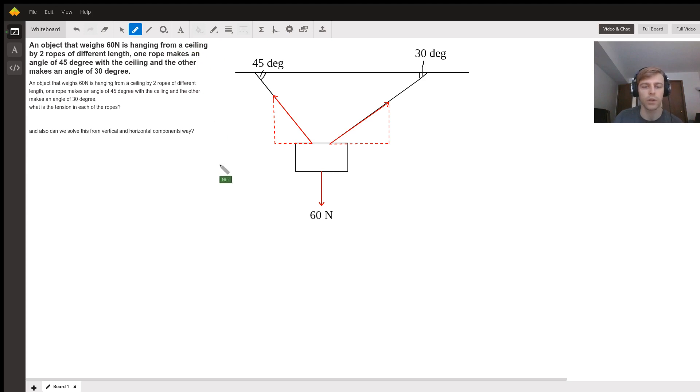So in our equation, then we have a sum of forces in the x direction and a sum of forces in the y direction. Now the angles here, this 45 degrees, alternate interior angles would tell you that this is also 45, and then since this is 30, this is also 30.